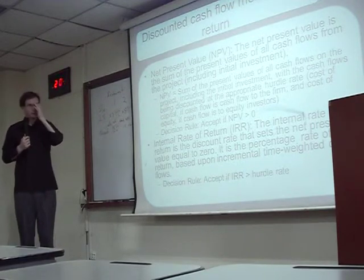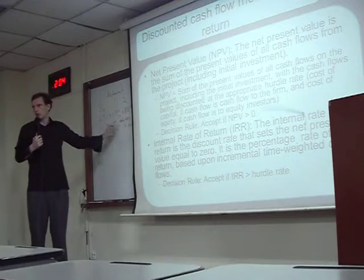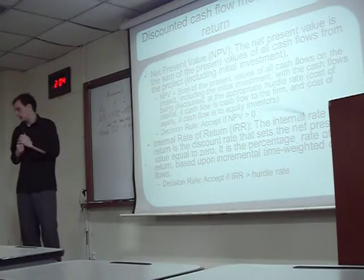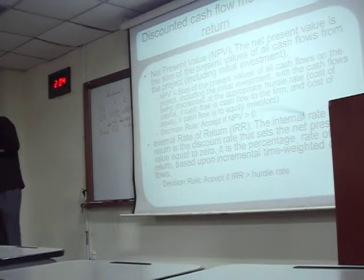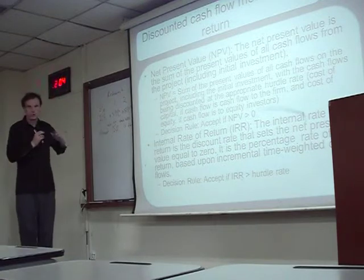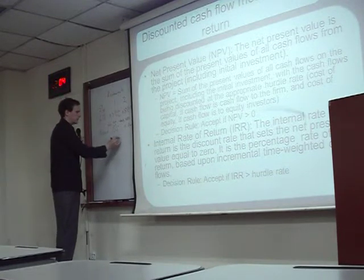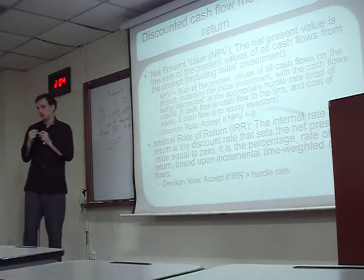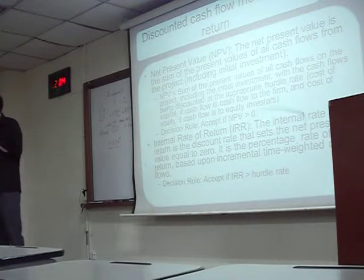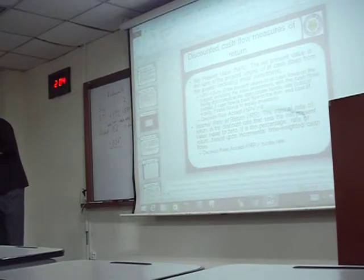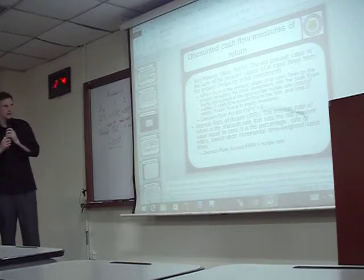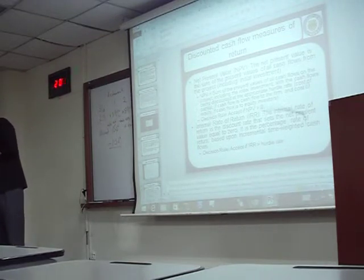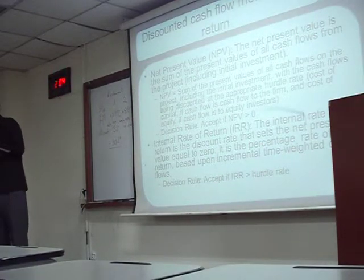We still have to calculate all the cash flows every year, and then we find the answer. The decision rule is: if the IRR is higher than our hurdle rate — our hurdle rate was 10%, and IRR was 15% so yes, it's higher — we'll make 5% extra, so we'll take the project. So these are our two main rules: net present value and internal rate of return. The main difference is NPV is measured in dollars; IRR is measured in percent. We're using the same data.